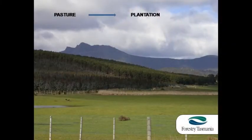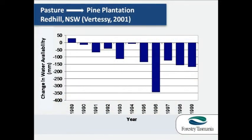The reason why Forestry Tasmania has been conducting research into plantation water use in Tasmania is because there's quite a bit of existing research showing that when you change vegetation types you also change the availability of water. As an example, if you convert pasture to plantation what you typically see is a decrease in the amount of water that's available within an area.